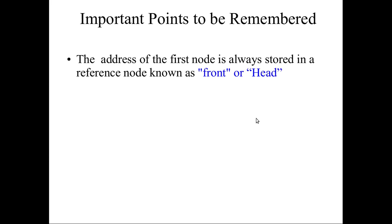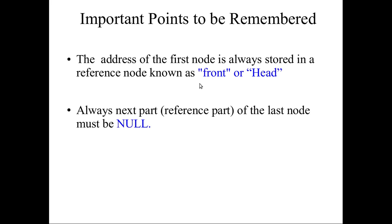There are two important points: first, the address of the first node is always stored in a reference node known as the front node or the head node. Second, the next field of the last node is null, because there is no next node after it — so the address part of the last node is always null.